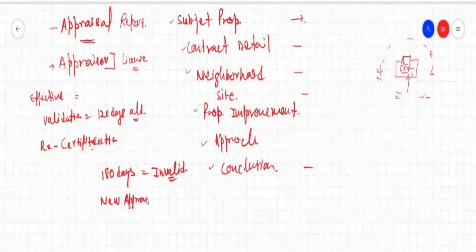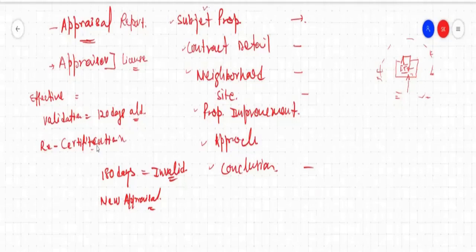Now, in some cases when it comes to giving a loan, collateral is the section which includes all the property information. To clarify: if the appraisal is more than 180 days old, we need a new document — a new appraisal. We cannot use the old one. But if it is more than 120 days old, we go for a recertification and do not need a new appraisal report. We can still consider it with the recertification. If it is more than 180 days old, it becomes invalid and we need a new appraisal report.